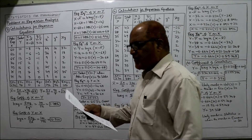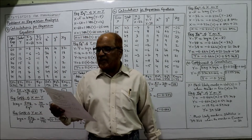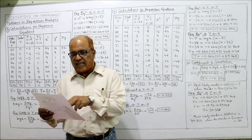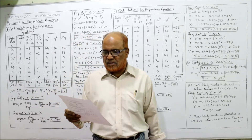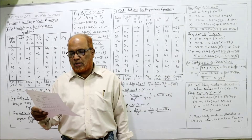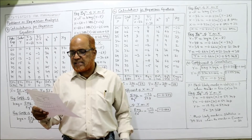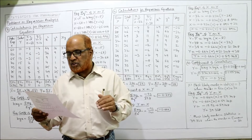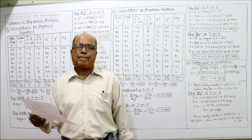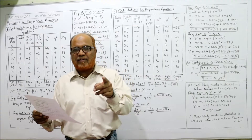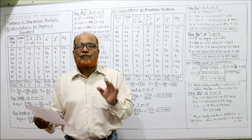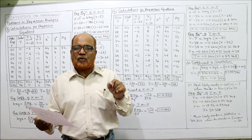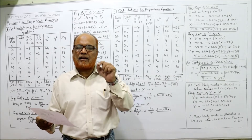See problem number three. The following figures relate to advertisement expenditure and sales. Two variables are given: advertisement expenditure in rupees in lakhs, and sales in rupees in crores. We have to estimate the sales for an advertising expenditure of 90 lakhs, and the advertising expenditure for a sales target of 25 crore. To calculate one variable given the other, we need the regression equations.